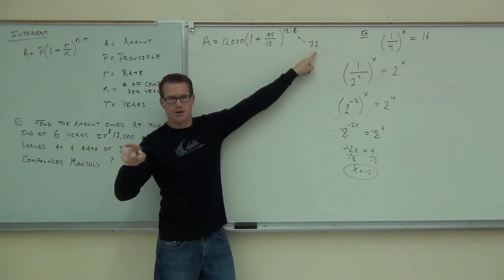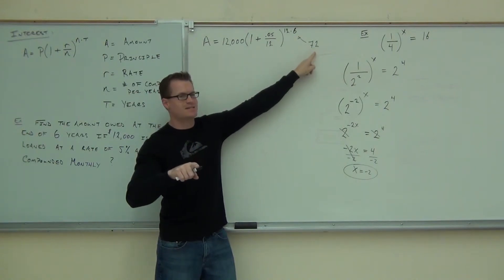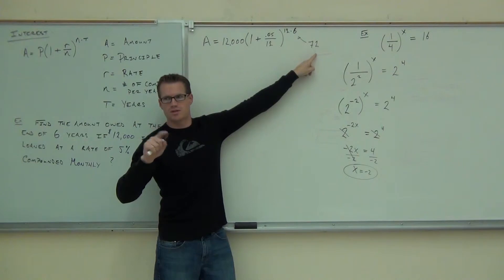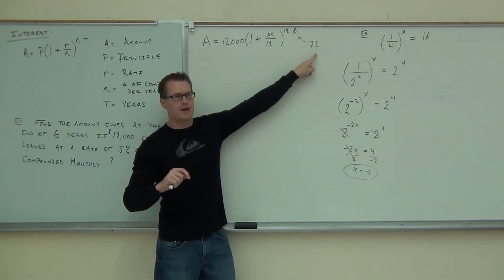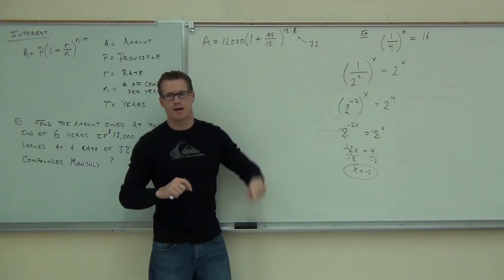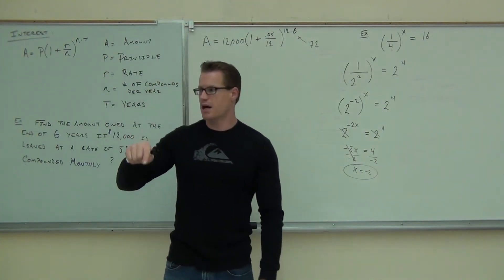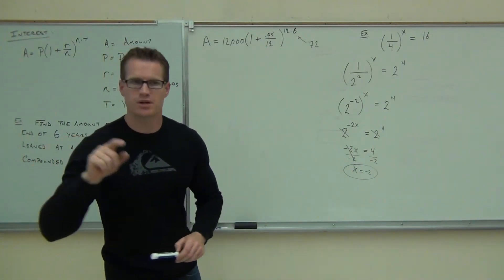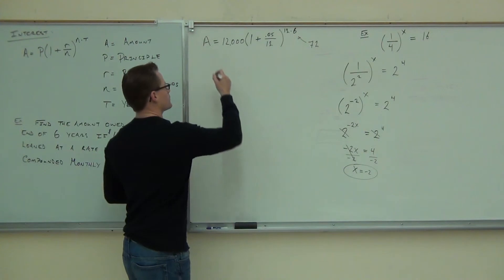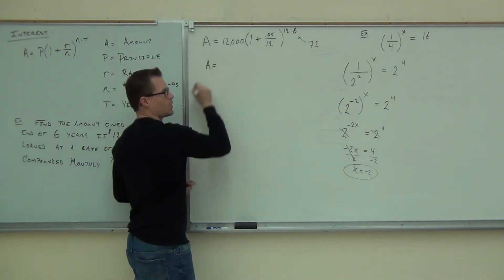0.34. Anybody else have 0.34? To the 72nd power. So, to the exponent, 72. Should be 1 something. 1.34 something. You got that? Now, after that, multiply by 12,000. Press times 12,000. Then press equals. And that will give you the amount that you're owed all in one step.